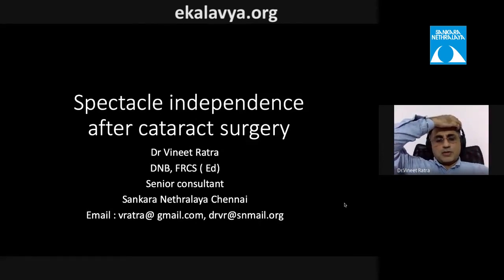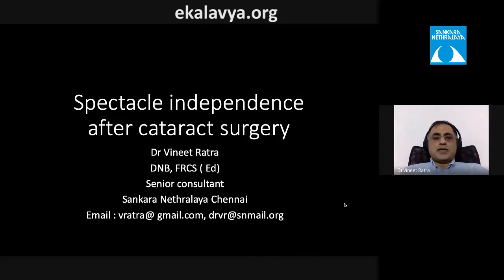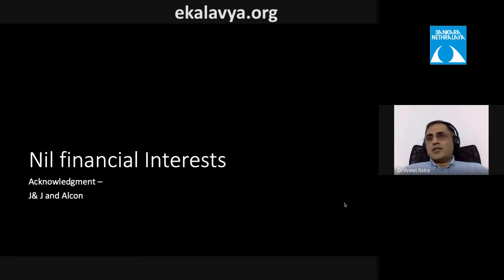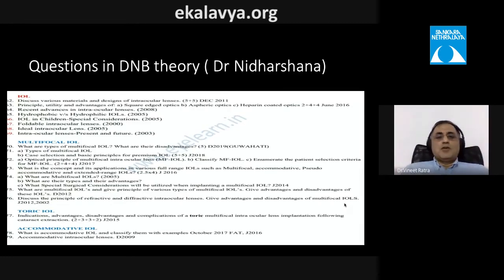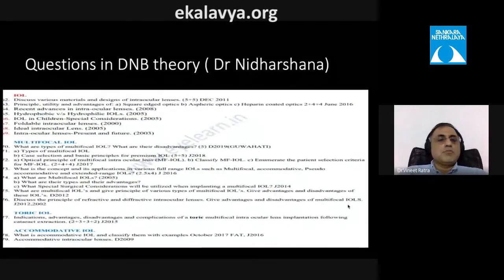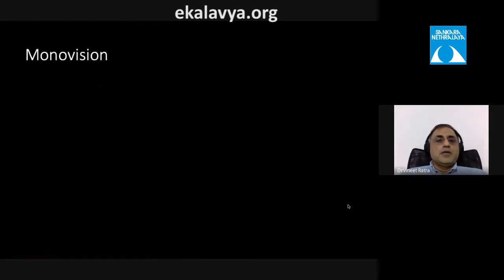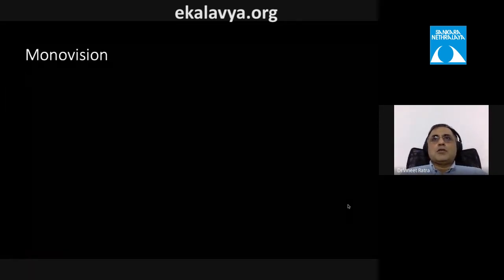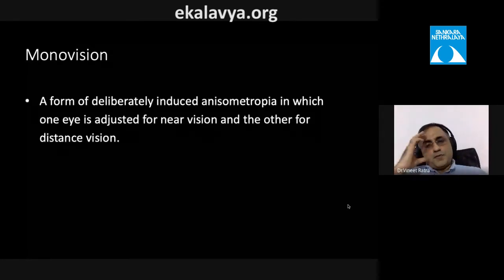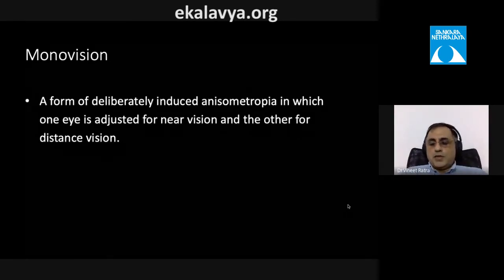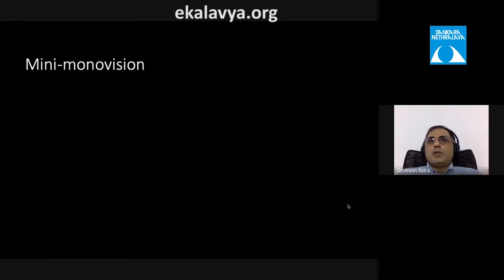The second part of the talk addresses spectacle independence after cataract surgery. Monovision is a form of deliberately induced anisometropia in which one eye is corrected for near and the other for distance. Mini-monovision — targeting an intermediate power in one eye with up to 1.0–1.75 diopters of anisometropia — is preferable, requiring less neuroadaptation and giving better stereopsis and contrast sensitivity.